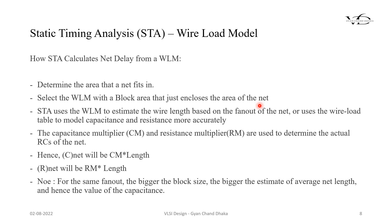Based on that area, the STA tool will go and select the WLM. Then the STA will use the WLM to estimate the wire length based on the fanout of the net. Based on the fanout of the net, the WLM will provide the corresponding wire length. Then the capacitance multiplier and resistance multiplier, which come from the WLM, are used to determine the actual RC delay of the net. For example, the total net capacitance becomes the capacitance multiplier from the selected WLM model multiplied by the length, which also comes from the selected WLM model based on the fanout of that net.